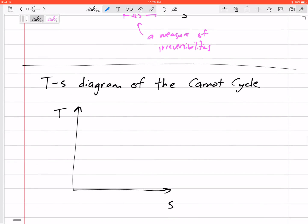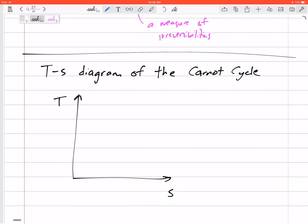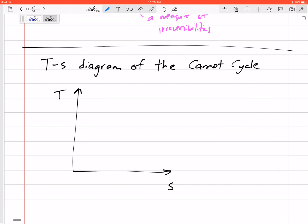Alright, so here's the TS diagram of the Carnot cycle. So we've done the PV, I believe, diagram of the Carnot cycle. If you remember that, it looks something like this. But I think the TS diagram really shows why the Carnot is the best, it's the ideal cycle.